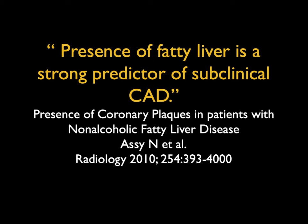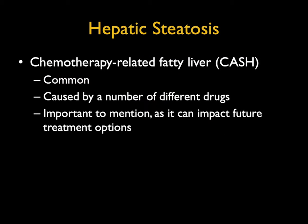Fatty liver can develop quickly — in patients on hyperalimentation, in a matter of days. Chemotherapy-related fatty infiltration of the liver, or CASH, is not uncommon and can be caused by a number of different drugs. A combination of poor nutrition, malabsorption, and medication could all be problematic.